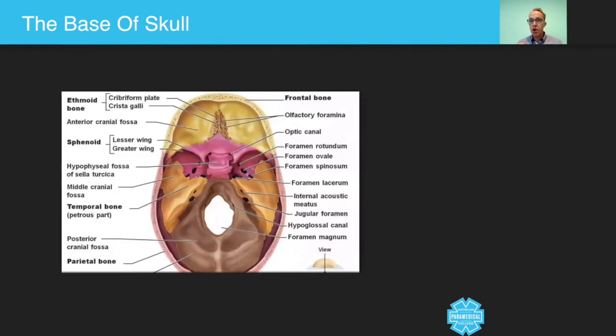Now, of course, when you look at the individual bones and the individual structures, yes, it becomes pretty complex. So you've got the olfactory foramina. Now that's to do with the sense of smell. So the cranial nerves, number one, which is the olfactory nerve will actually be protruding through there.